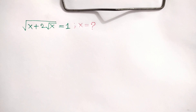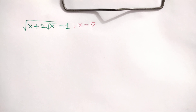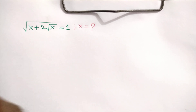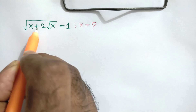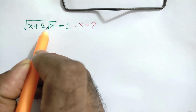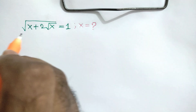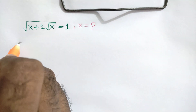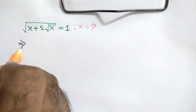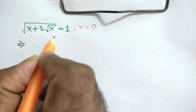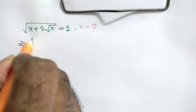Hi everyone. In this video I am going to show how to find the value of x where square root of x plus 2 square root of x is equal to 1. Squaring both sides, we can write here: